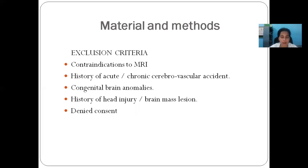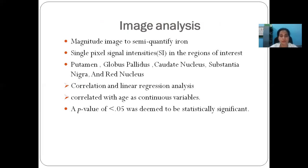The exclusion criteria included contraindications to MRI such as ferromagnetic or cochlear implants, history of acute or chronic cerebrovascular accident, congenital brain anomalies, history of head injury, or brain mass lesion, and patients who denied consent. For image analysis, magnitude images were used to semi-quantify iron using single-pixel signal intensities in regions of interest including the putamen, globus pallidus, caudate nucleus, substantia nigra, and red nucleus.